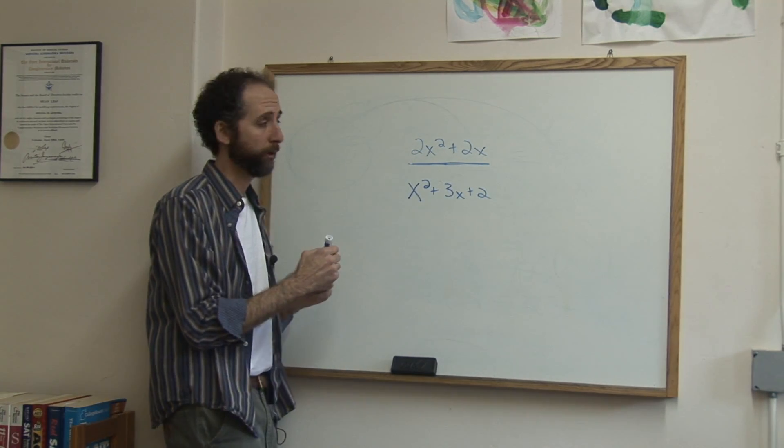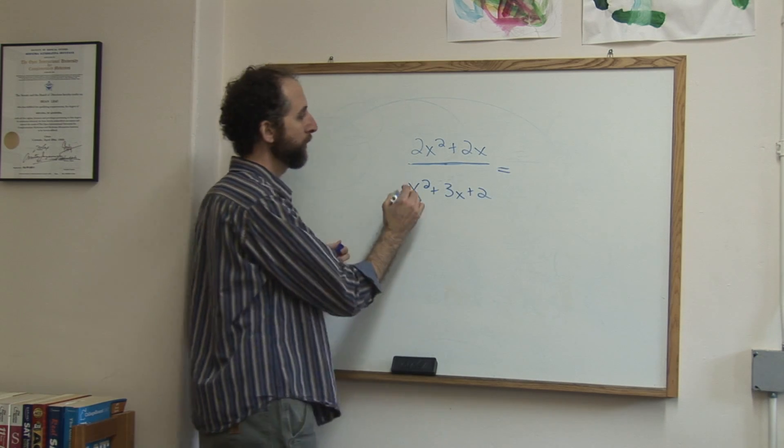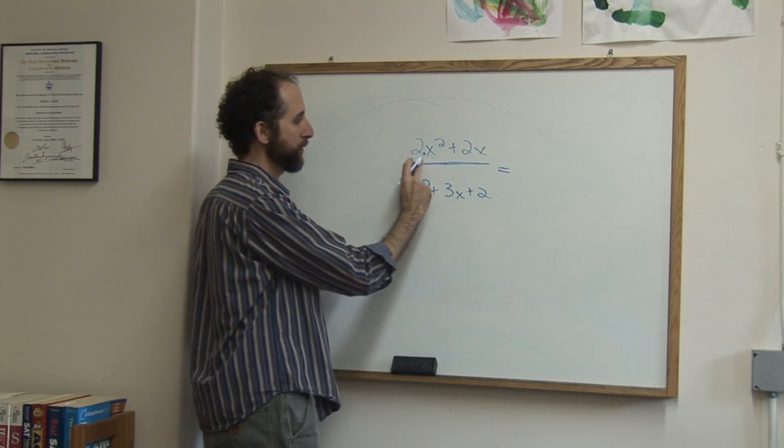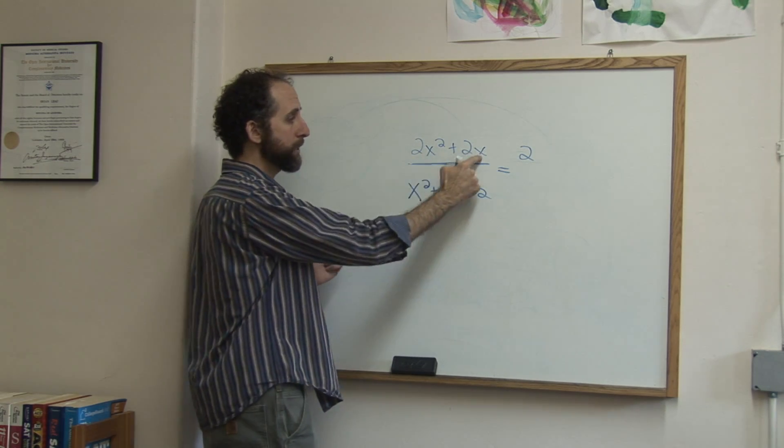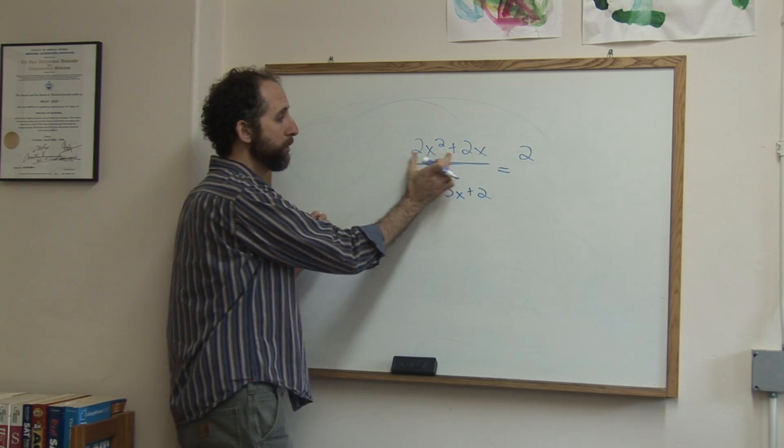The top part can factor. What can we factor out there? You have to say, what's a common factor to both parts? Clearly 2 is common to both parts. You can actually see that x is in both parts, meaning both terms have an x.